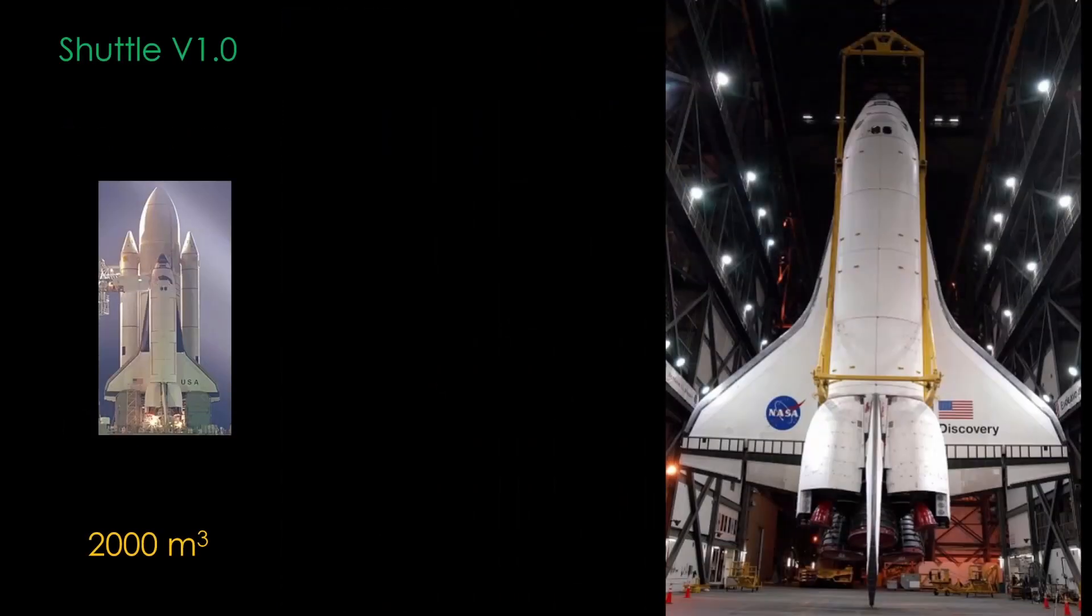We can reduce that 2,000 cubic meter requirement if we change our architecture. The current Shuttle is a stage-and-a-half design. The orbiter engines ignite on the ground and run all the way to orbit. This requires quite a bit more propellant.